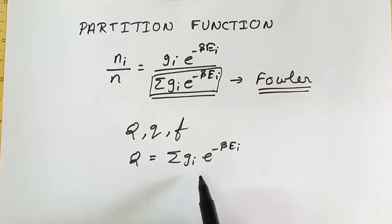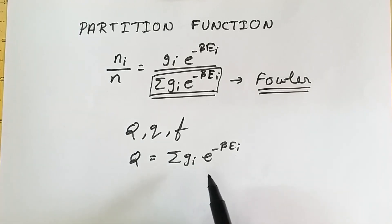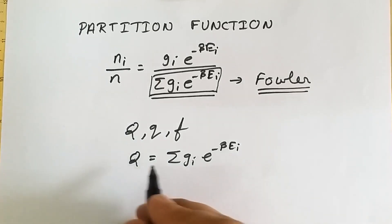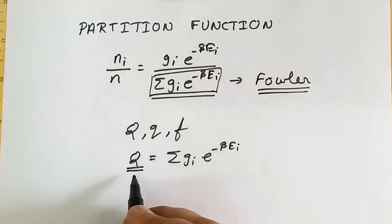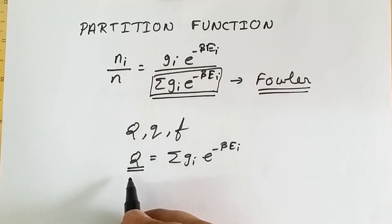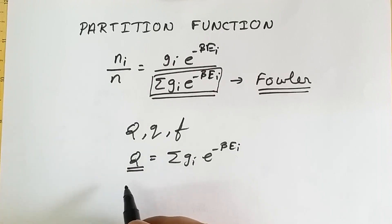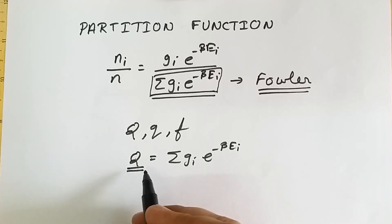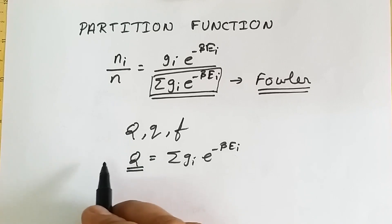The partition function is a dimensionless quantity, and it depends on the molecular weight, molecular volume, temperature, and several other factors. The partition function can be represented in the form of several thermodynamic functions like internal energy, entropy, work function, pressure, free energy, as well as heat capacity.